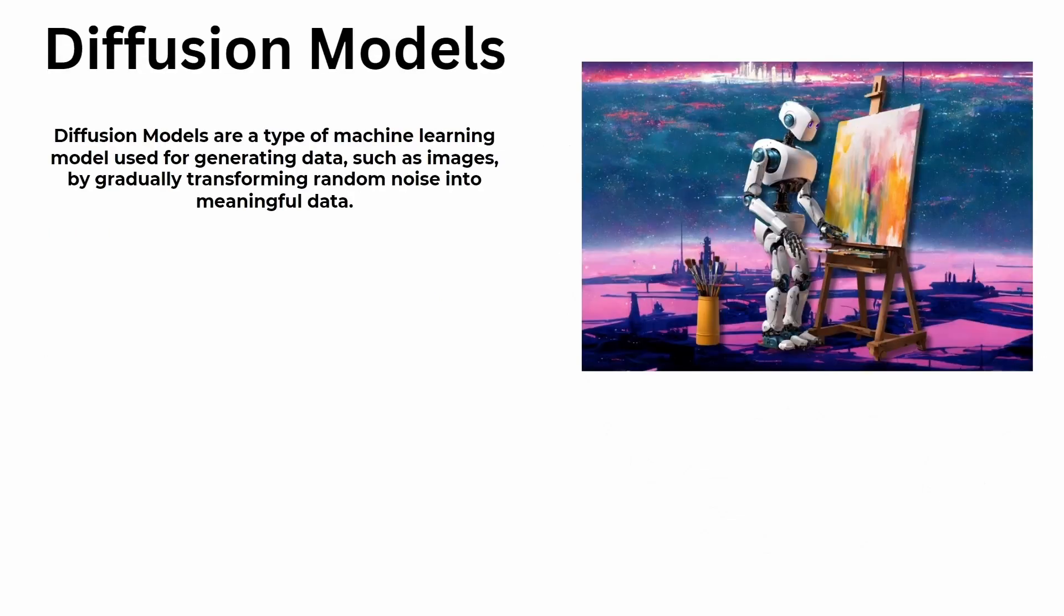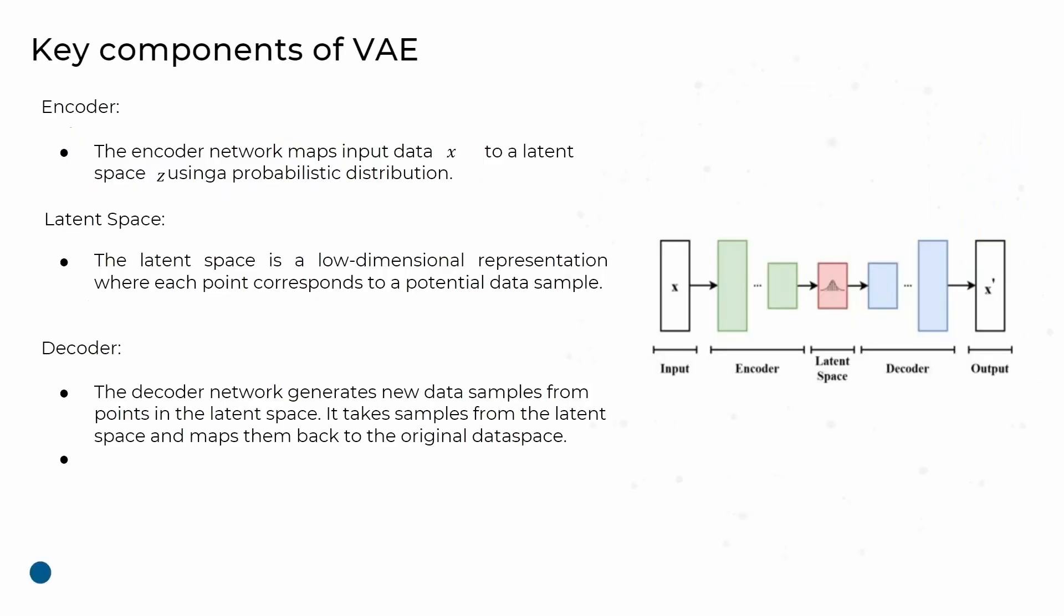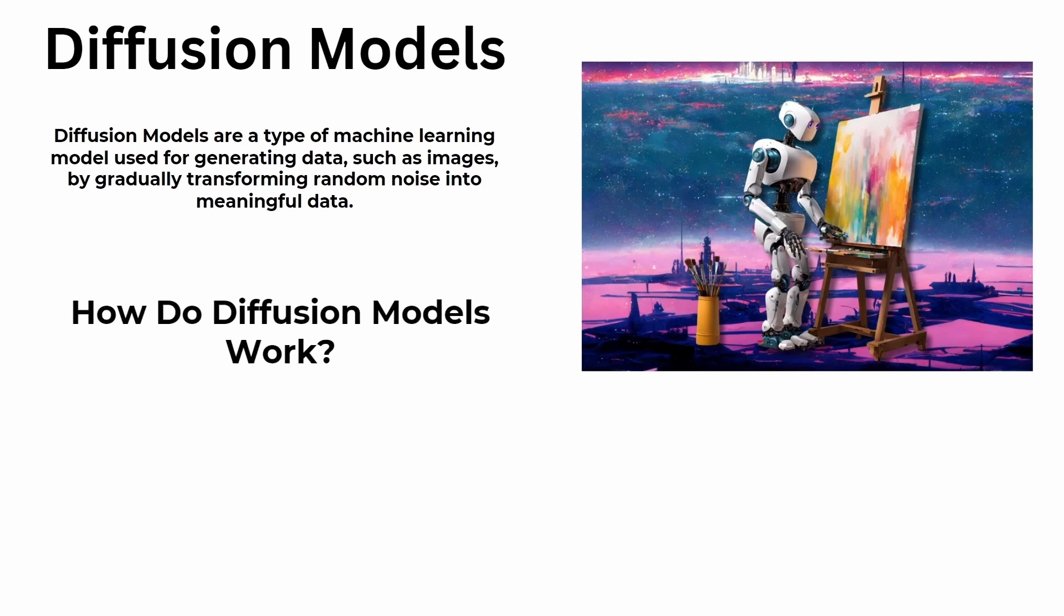Next, we have diffusion models. What exactly is a diffusion model? In simple terms, it first adds noise to an image, then performs denoising. The model learns this denoising step.